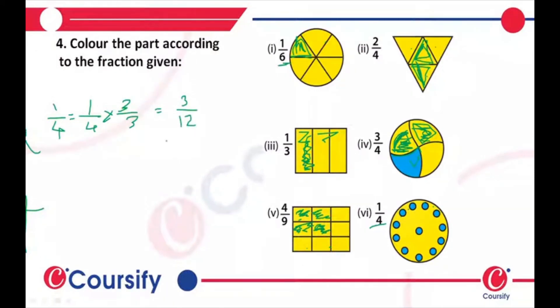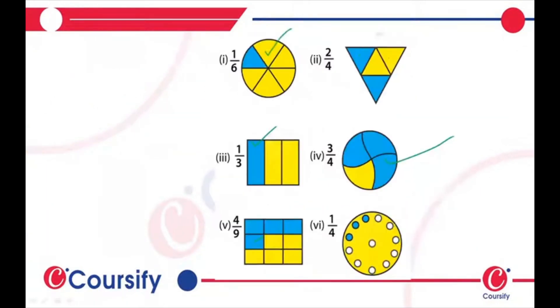So now let's check, there are 12 parts, right? Now we have to shade 3 out of the 12 parts. When we shade 3 out of 12 parts, this is what we get. The answer will be 1/4, it will be correct.